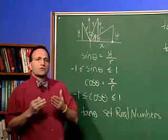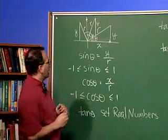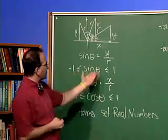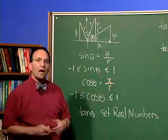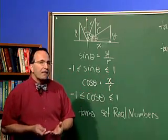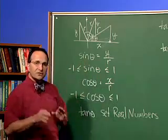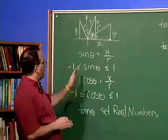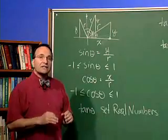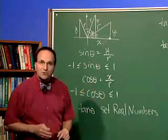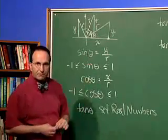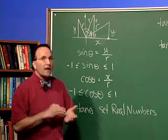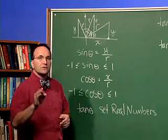What about the three reciprocal functions? For example, the reciprocal of sine theta is cosecant theta. If sine theta has to be between negative one and positive one, then its reciprocal — cosecant theta — would have to be, on this end, greater than or equal to one, and on this end, less than or equal to negative one. That is to say, it'll never have a value in between negative one and one, because it's the reciprocal of sine. So cosecant theta is greater than or equal to positive one or less than or equal to negative one.